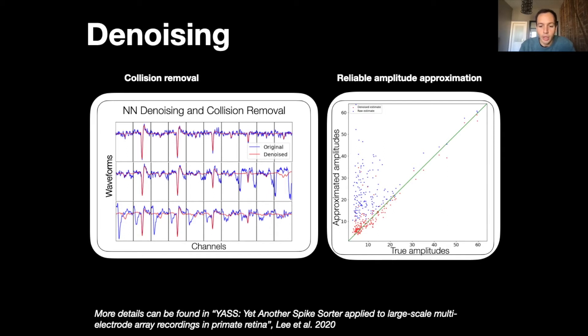On the right figure, what we've done is we've taken templates of clean spikes and we've added raw snippets of data to get raw waveforms, and then we've computed the amplitudes of these waveforms before and after denoising and compared them with the true amplitudes of the template. What we see is that the red amplitude which corresponds to the denoised amplitude are much closer to the true amplitudes, and this denoiser outputs very reliable waveforms and retains the true amplitude of the waveforms.